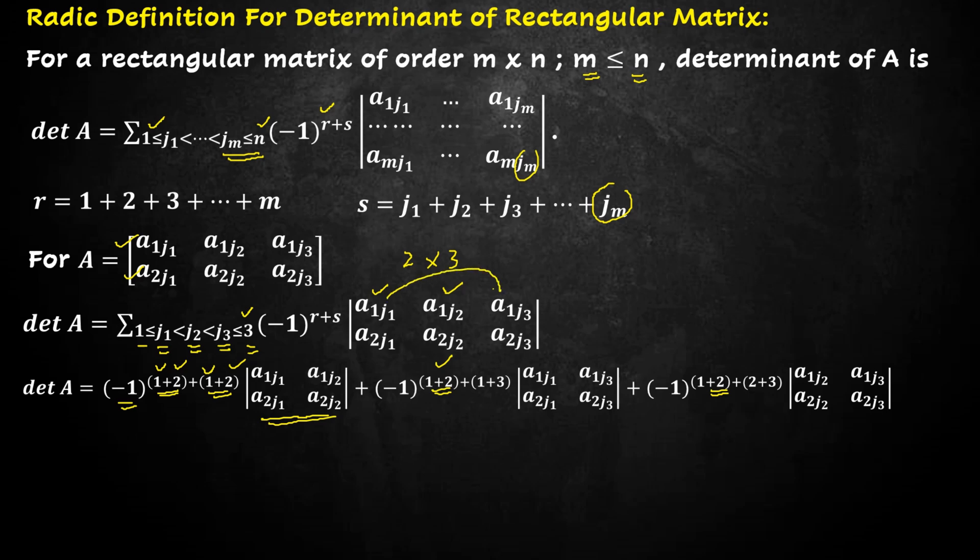Now we take first and third column, 1 plus 3, and write first and third column and make a 2 x 2 determinant.